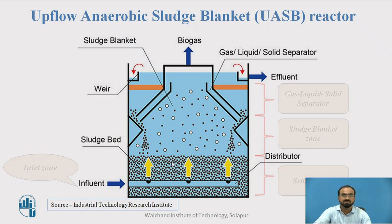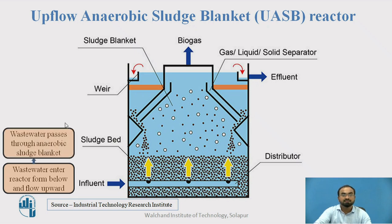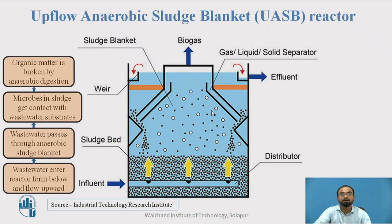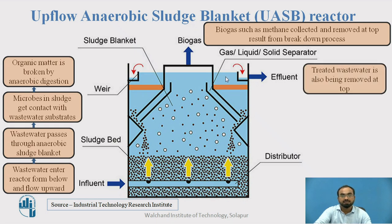Now let us see the process. First, wastewater enters the reactor from the bottom and flows upward. Then the wastewater passes through the anaerobic sludge blanket. The microbes in the sludge get contact with the organic matter or wastewater substrates. The organic matter is broken down by anaerobic digestion. Then a large amount of biogas such as methane is collected and removed from the top as a result of the breakdown process. The treated effluent is also removed from the top.